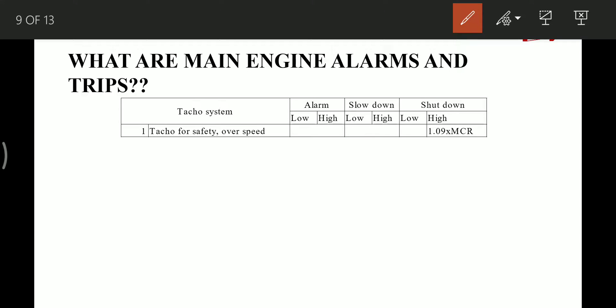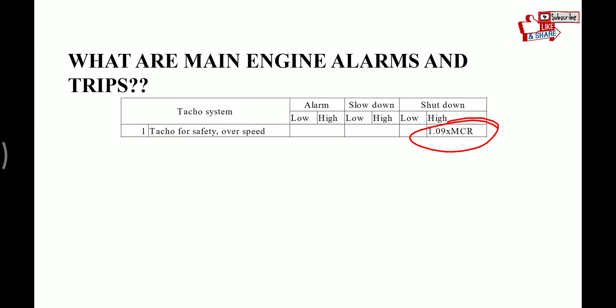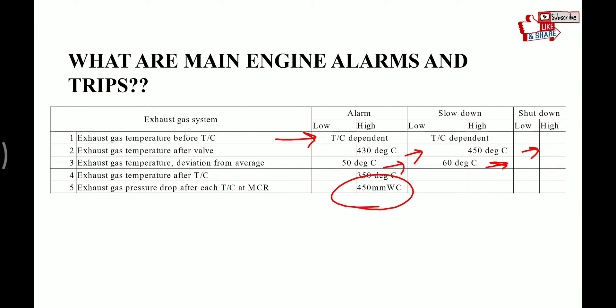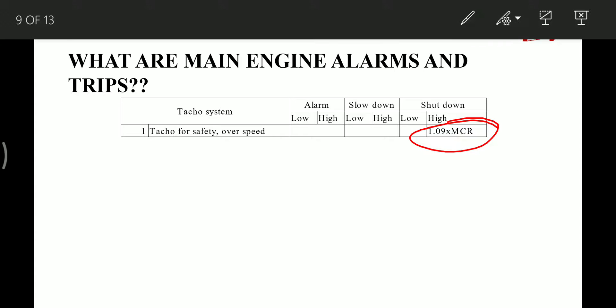The TACO system: the TACO sensor is provided for overspeed protection. It shuts down the engine when its value reaches 1.09 times the MCR value — that is 109% of MCR speed. This is basically the overspeed alarm.